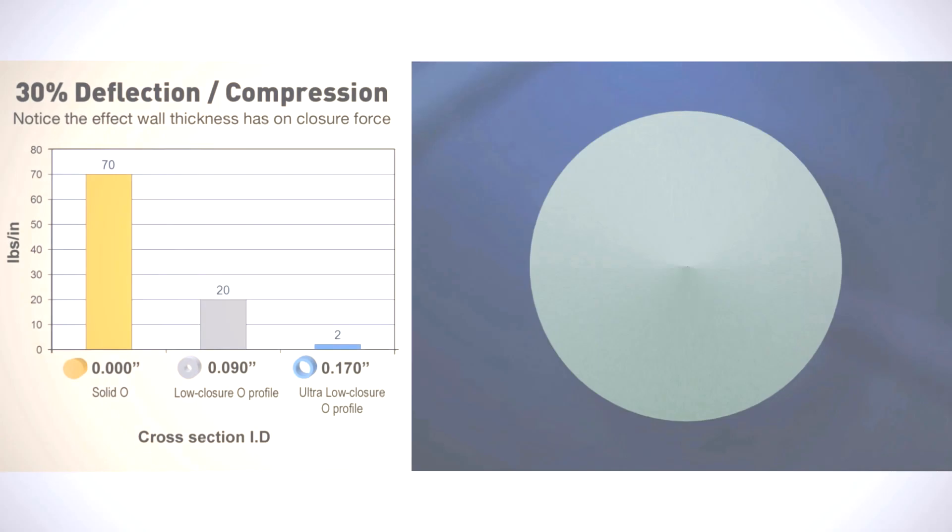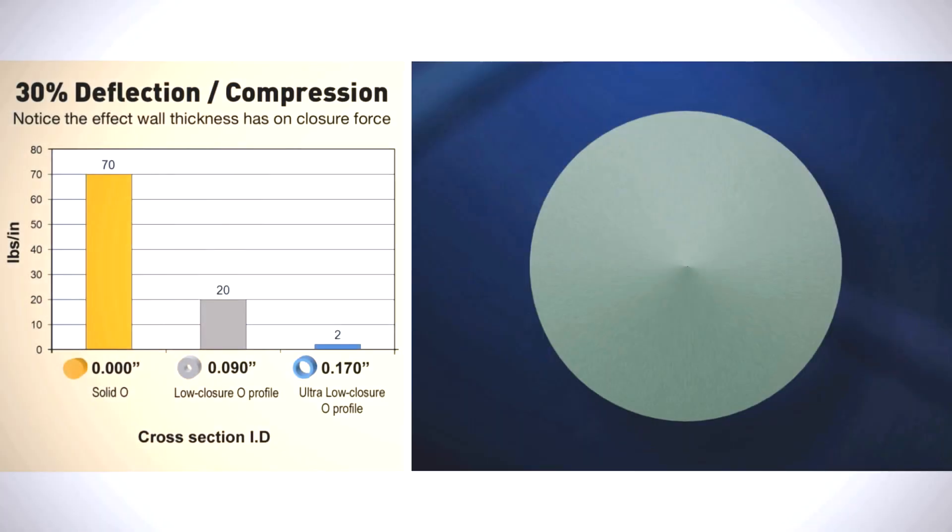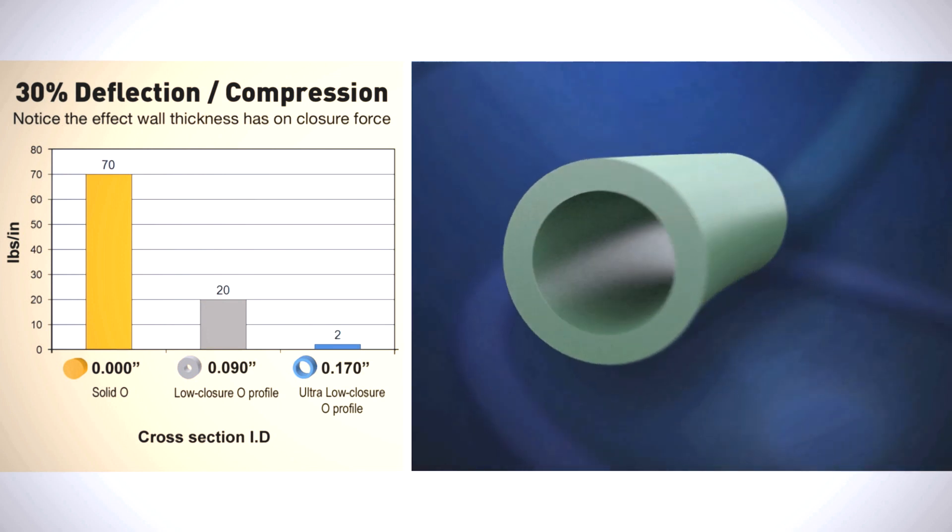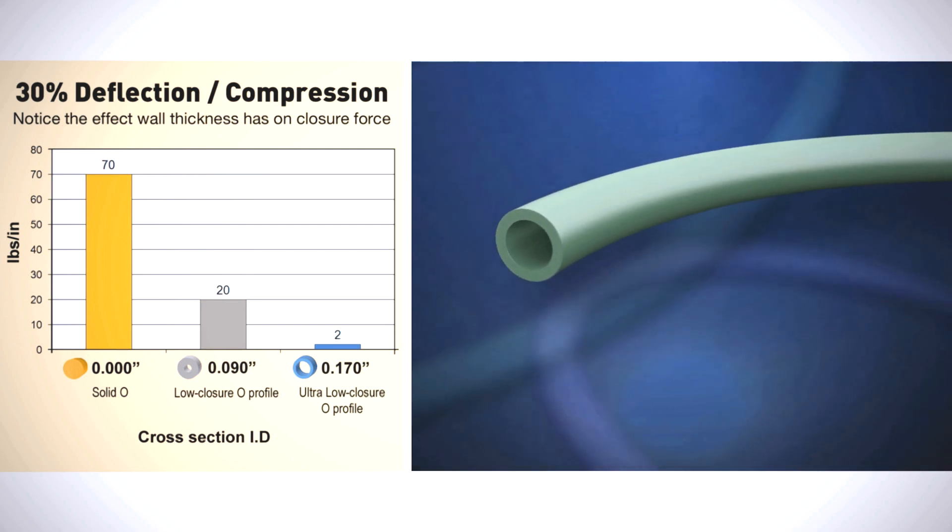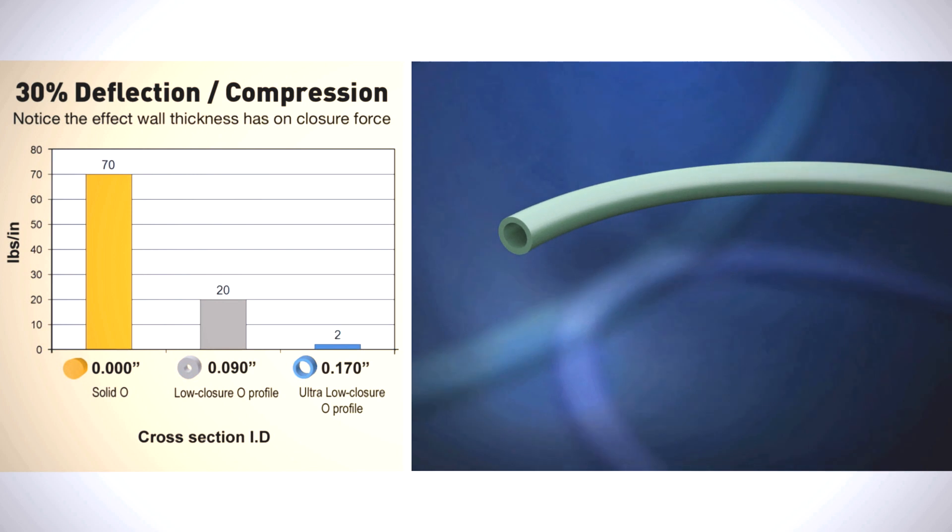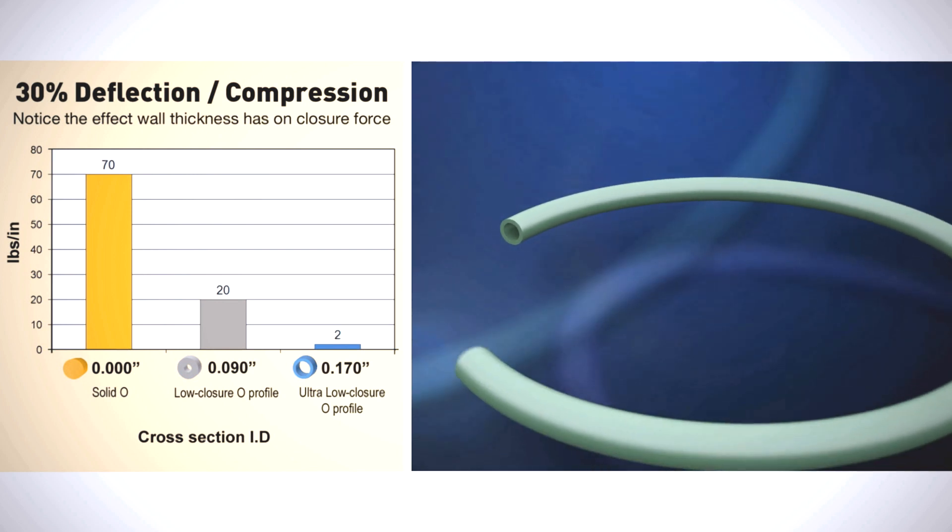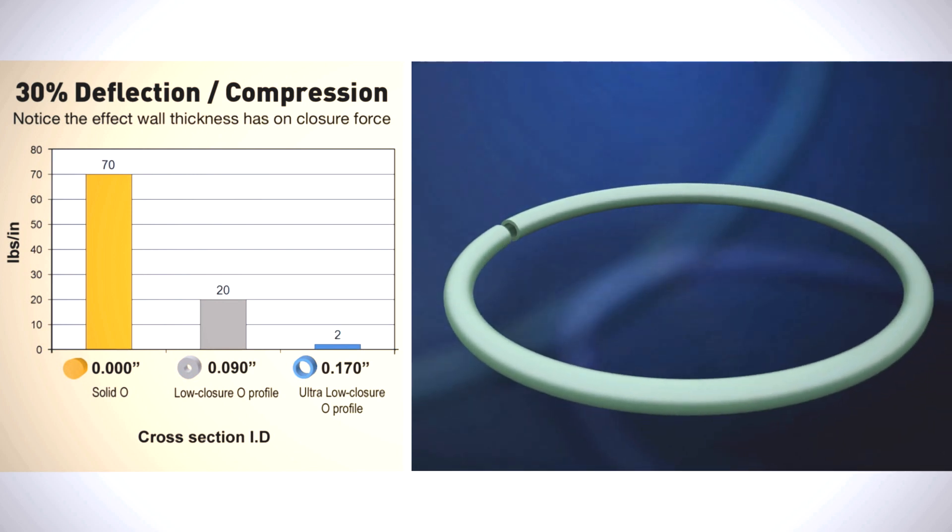The required compressive force pounds per inch in hollow O-extrusions can be customized to specific applications and designs by adjusting the wall thickness of the cross-section. This customization allows for more flexibility in the design of the enclosure and choice of construction materials.